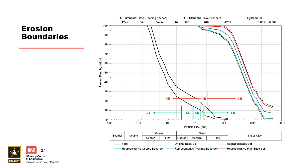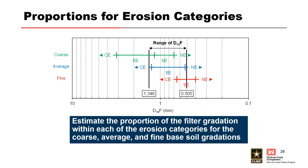After estimating all four erosion boundaries, plot them on the original filter gradation curves on the D15 line. If the filter gradation must be adjusted to account for segregation or washout, then plot that curve as well. This figure zooms in on the D15 line so that erosion boundaries are easier to examine for estimating proportions. The suggested approach is to estimate the proportions for continuing, excessive, and some erosion first, and then calculate the proportion for the no erosion category by subtracting the sum of the other proportions from one, making the erosion conditions collectively exhaustive.